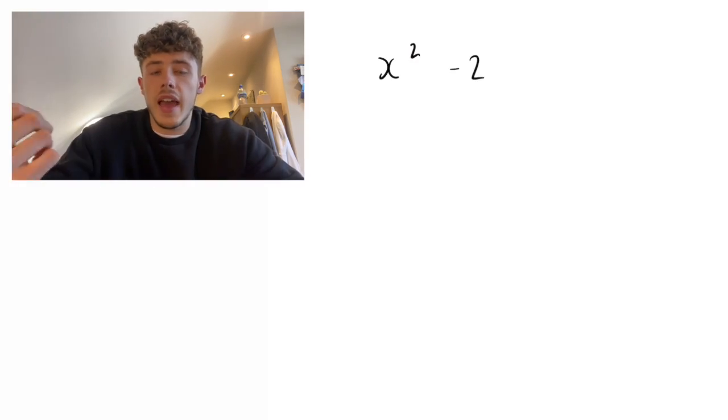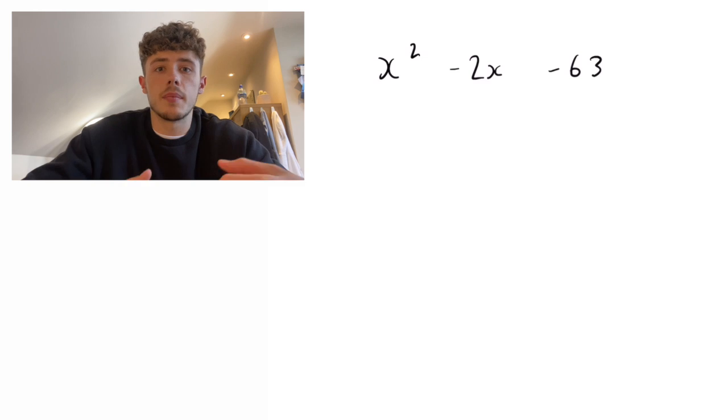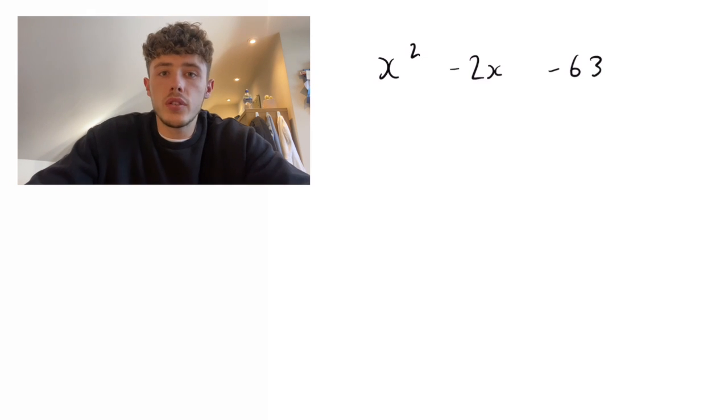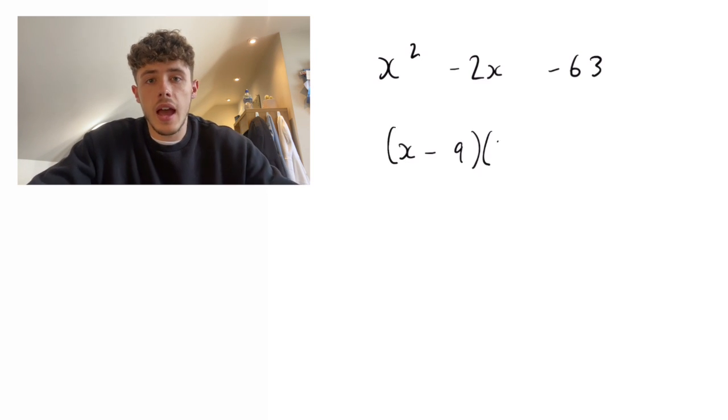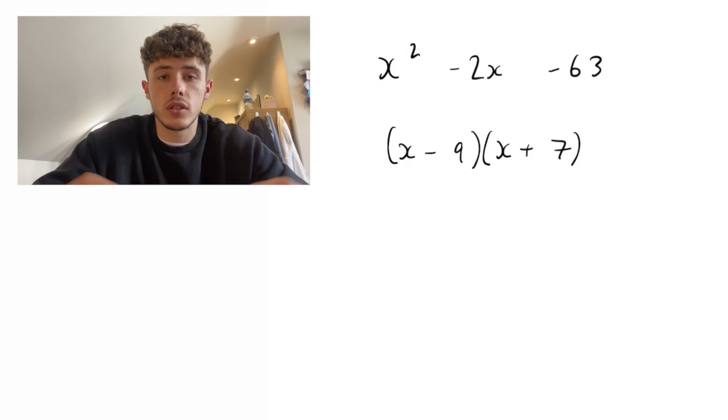Now some of you may argue this is quite a basic example, and you're fairly confident with this stuff anyway. You can do exactly the same with a quadratic. So this time let's say we use x squared minus 2x minus 63. Now if we try and factorise that, we do the usual, we try and find two numbers that times to make minus 63. In this case it would be minus 9 and 7, and we would put those into our brackets.